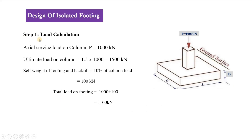The first step is to calculate the amount of load on the footing. The axial service load is given as 1000 kN. The ultimate load is obtained by multiplying by 1.5, giving 1500 kN. The self-weight of footing and backfill is taken as 10% of the column load, which is 100 kN. So the total load on the footing is 1100 kN.